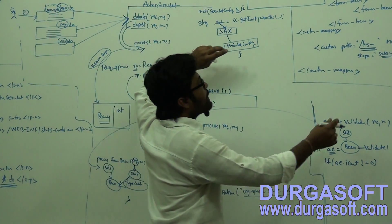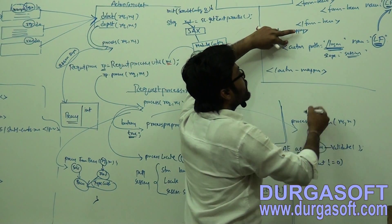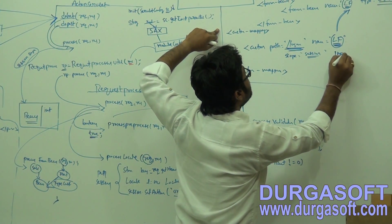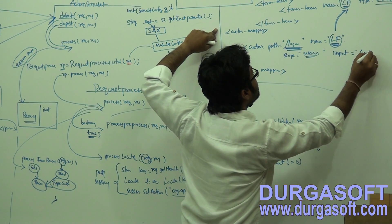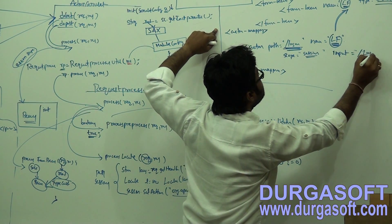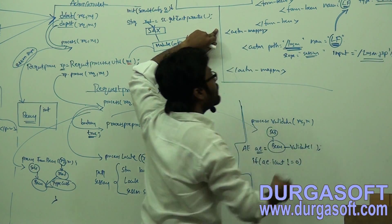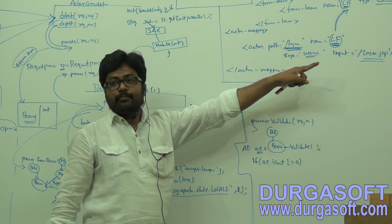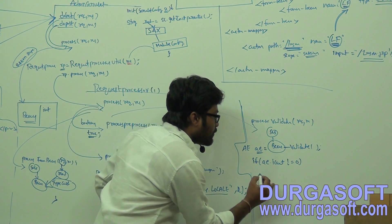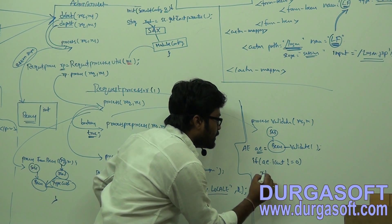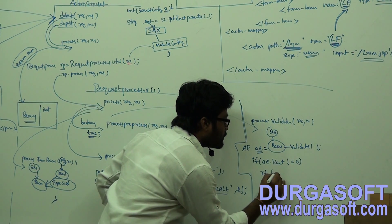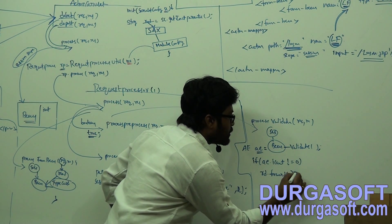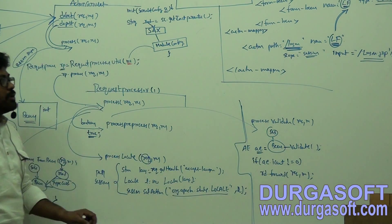Whenever it finds errors, we have the form-to-bean configuration. Then we also need to do bean-to-form configuration. By using the input attribute, you need to configure the same page name. If the page name is login.jsp, configure login.jsp there. If it finds any error messages in the ActionErrors object, it will redirect to the login.jsp page using RequestDispatcher.forward, passing request and response objects.